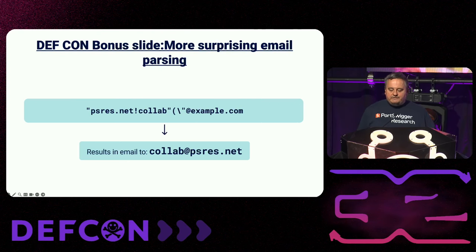As a further bonus, here is some surprising email parsing behaviour that works on Postfix. I couldn't use these for access control bypasses, but they are interesting and challenge your assumptions of how email addresses are parsed. This first one uses a UUCP address and is sent regardless of the quotes — pretty damn crazy. This second one uses source routes, and if you use a square bracket syntax, Postfix will still treat it as a source route and send to that email.